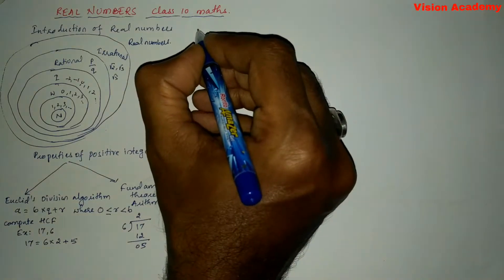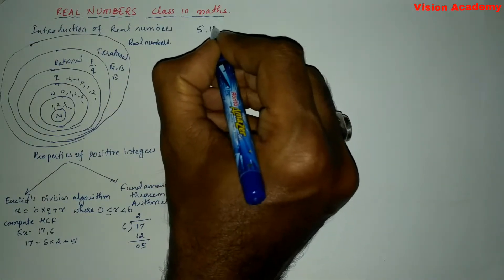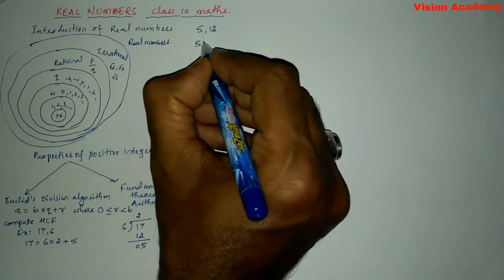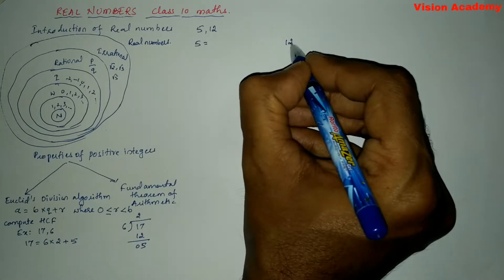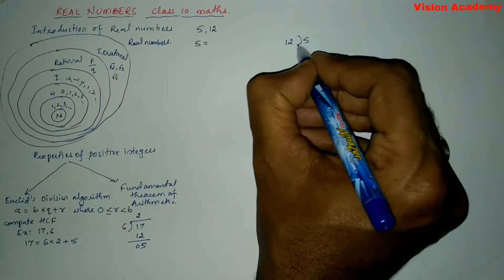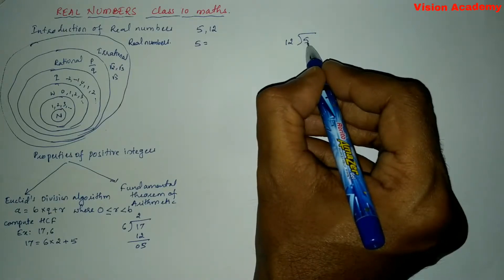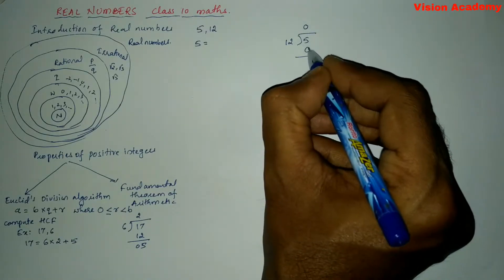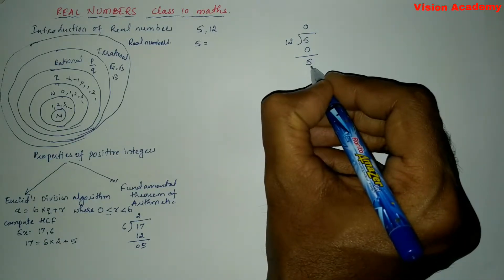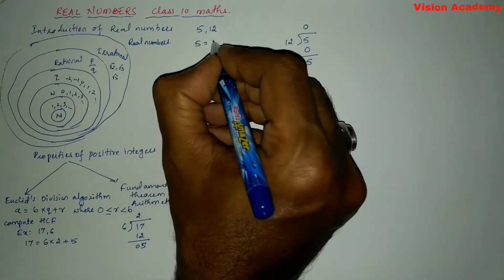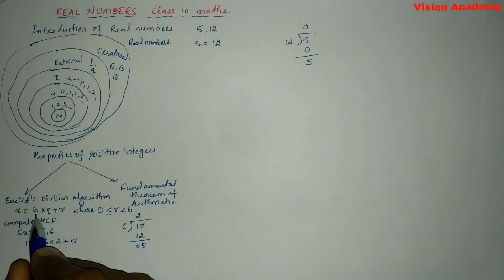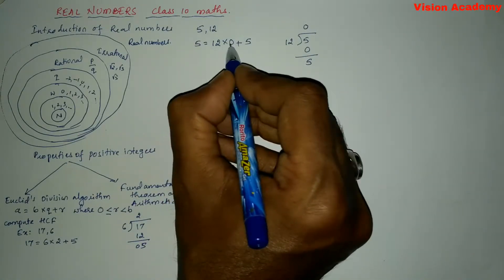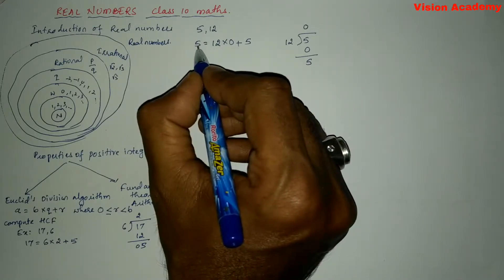Let us take one more example: 5 and 12. Take 5 as dividend and 12 as divisor. We write: 5 cannot be divided by 12 because 5 is less than 12. So the quotient is 0. Twelve zeros are 0, and 5 minus 0 gives us 5. So the remainder is 5. Same can be written as: 5 = 12 × 0 + 5. Twelve times 0 is 0, and 0 plus 5 gives us 5.